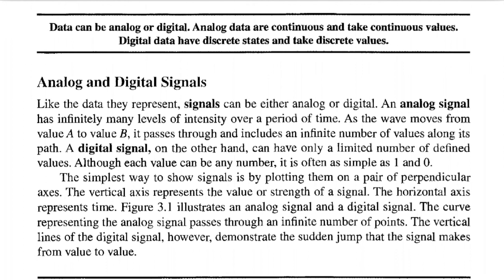The simplest way to show signals is by plotting them on a pair of perpendicular axes. The vertical axis represents the value or strength of a signal, and the horizontal axis represents time. This figure illustrates an analog signal and a digital signal. The curve representing the analog signal passes through an infinite number of points. The vertical lines of the digital signal demonstrate the sudden jump that the signal makes from value to value.